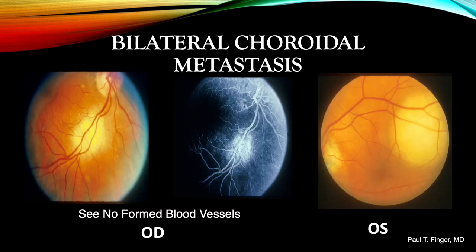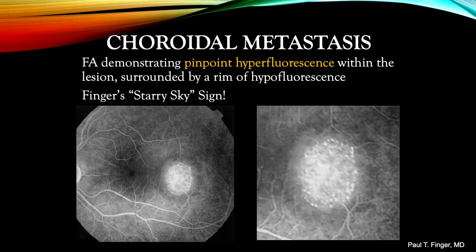In addition, metastatic choroidal tumors can be multifocal and bilateral. Finding and documenting all sites of metastatic disease is important for prescribing treatment. Therefore, the angiographer should take representative photographs of all retinal quadrants in both eyes, or use an equator plus photographic machine. This choroidal metastasis demonstrates a halo of hypofluorescence surrounding a starry sky of pinpoint hyperfluorescence. Though many different choroidal tumors will demonstrate a few microaneurysms, this intense pinpoint hyperfluorescence is relatively unique to metastatic disease.